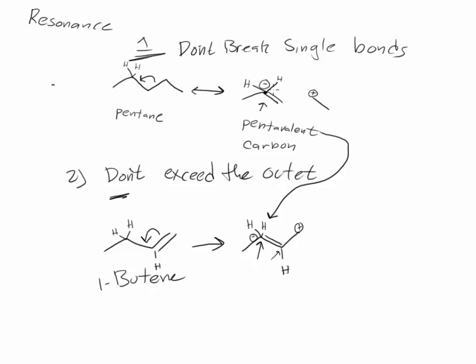These are the ones we have to keep in mind. Don't break any single bonds. Look at the double bond. So, the second part of the two bonds here, the pi bond, is the one that we can use to move around. So, let's look at some resonance patterns.